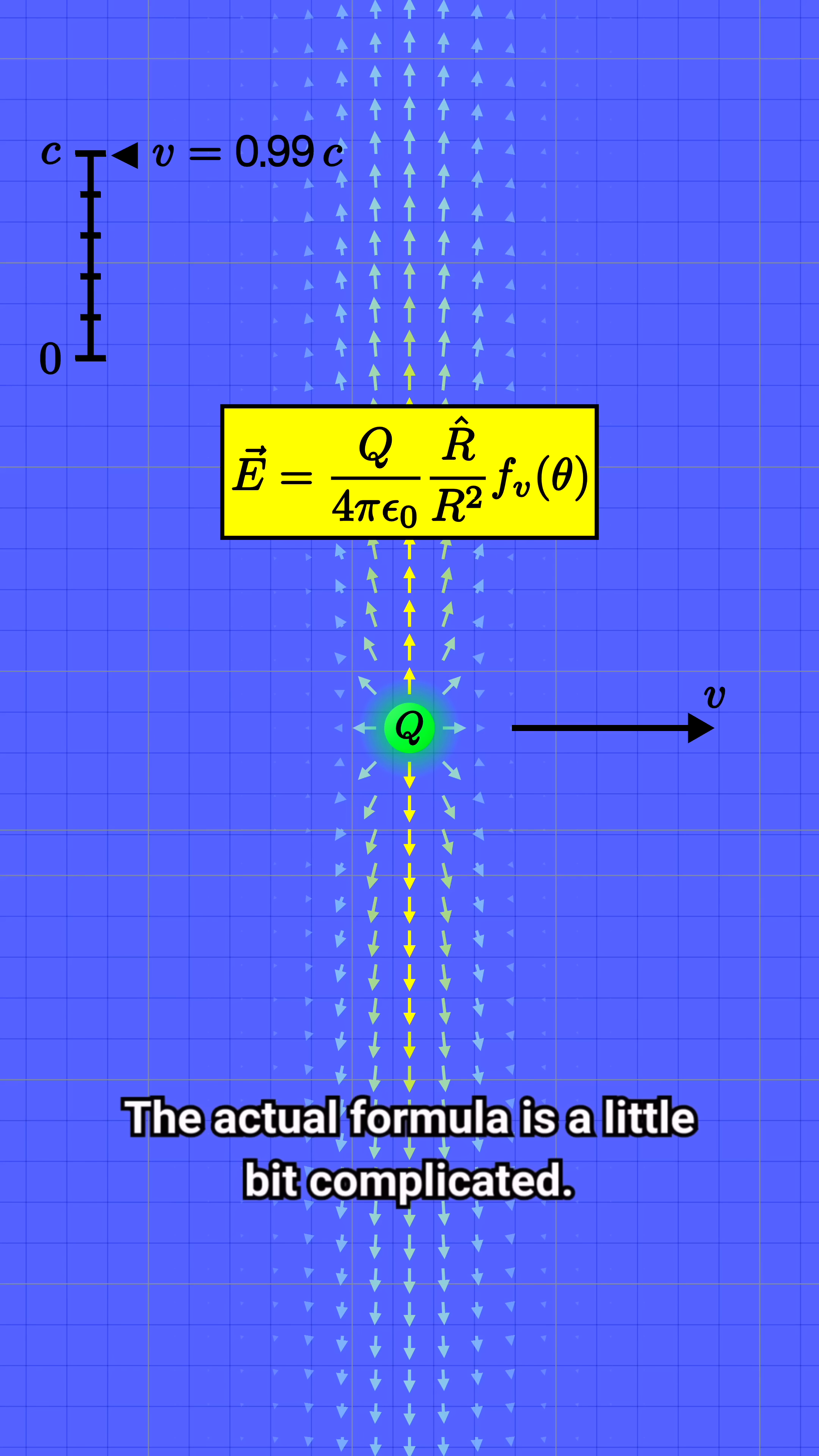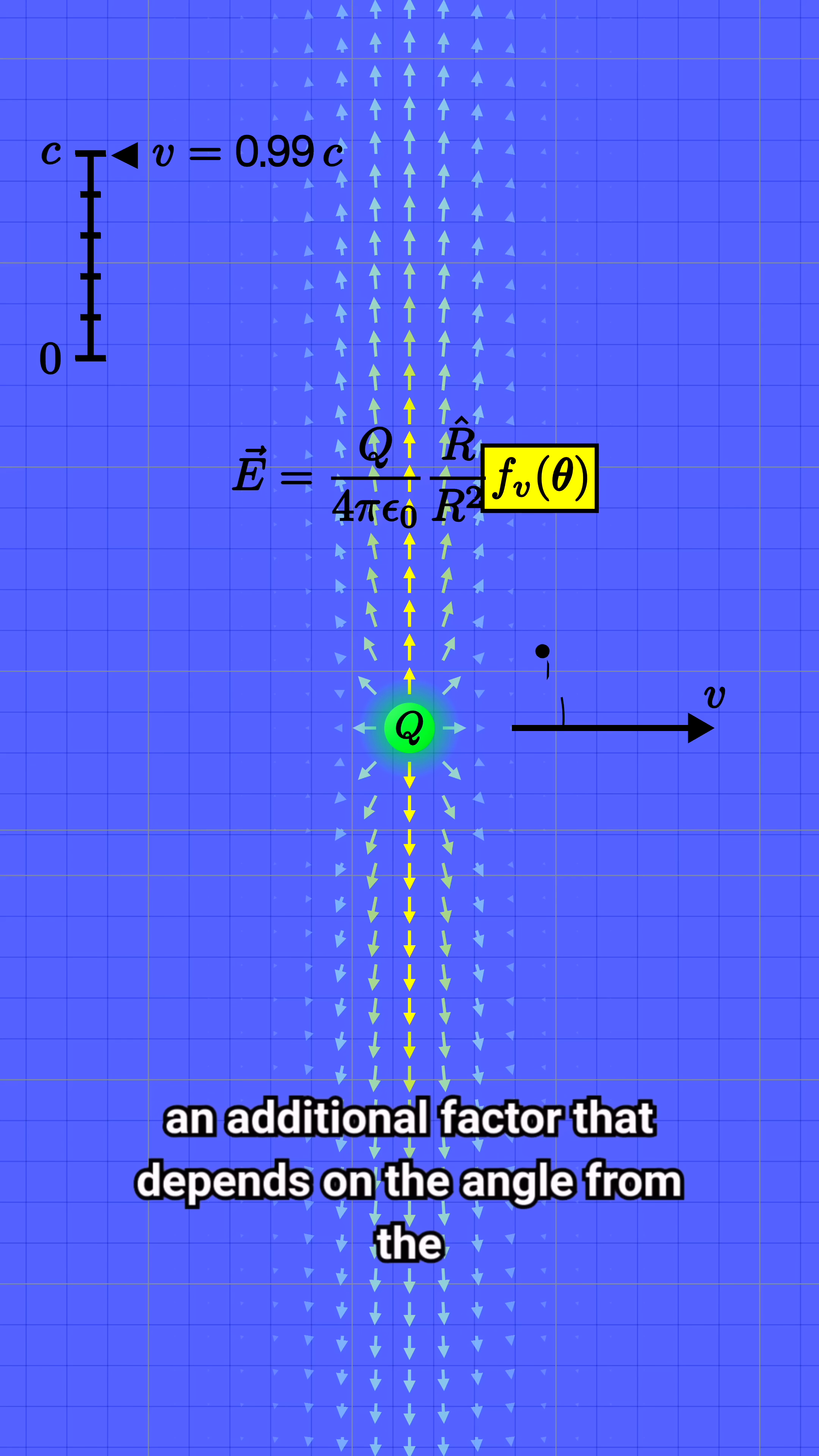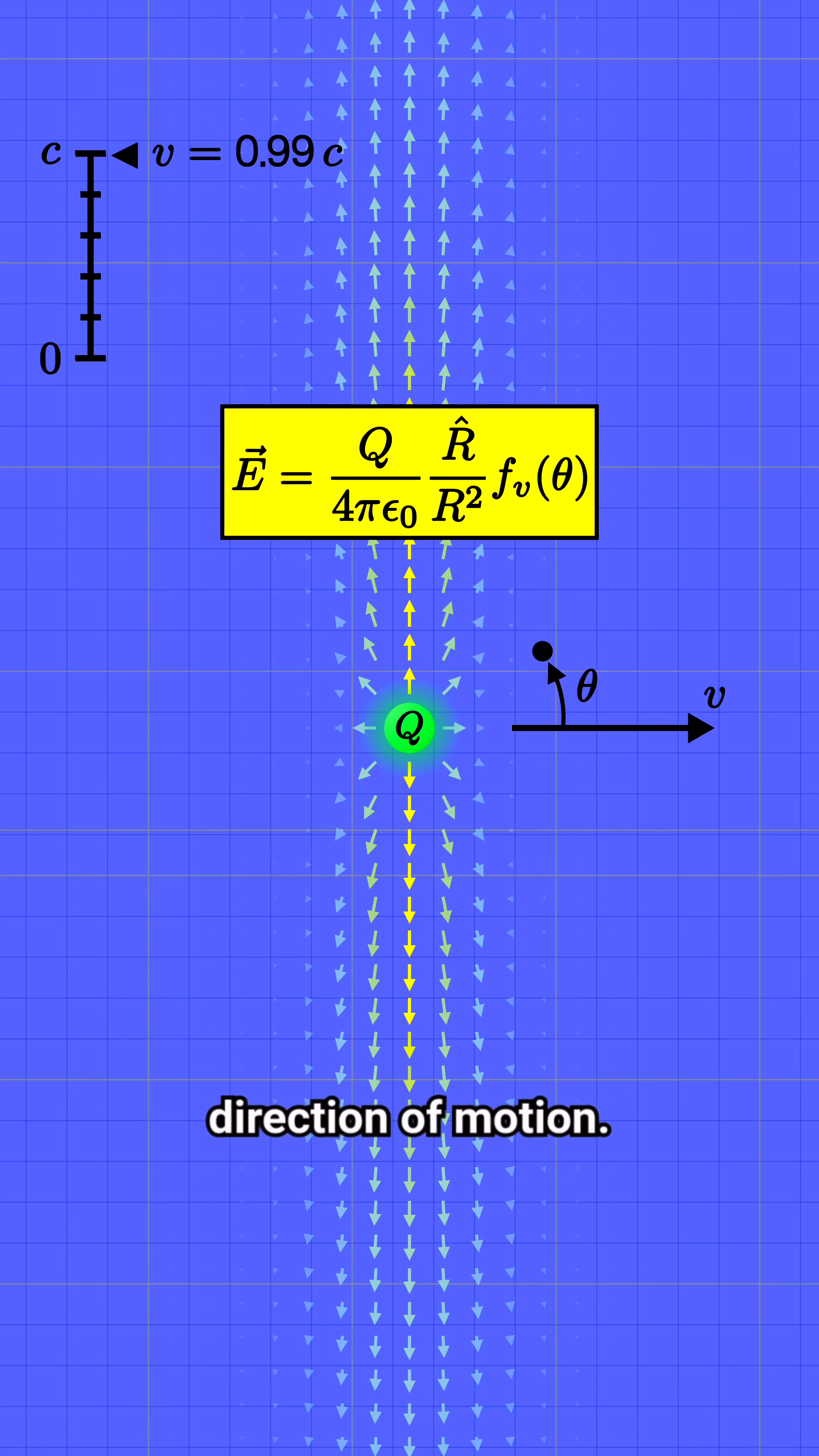The actual formula is a little bit complicated. Compared to Coulomb's law, the field of a moving charge is modified by an additional factor that depends on the angle from the direction of motion.